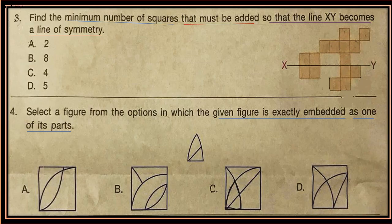Question 3: Find the minimum number of squares that must be added so that line XY becomes a line of symmetry. See the figure on the right side and identify line XY. Determine how many squares must be added so that line XY becomes a line of symmetry.